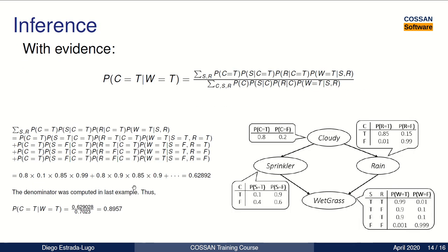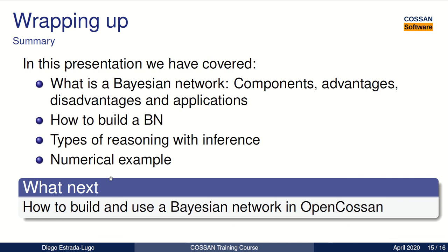So even though these operations seem to be simple, when we have a higher number of nodes, it can be very hard to do it by hand. So we need to use some computational tools. And for that, we're going to show how to use the COSEN toolbox for Bayesian networks.